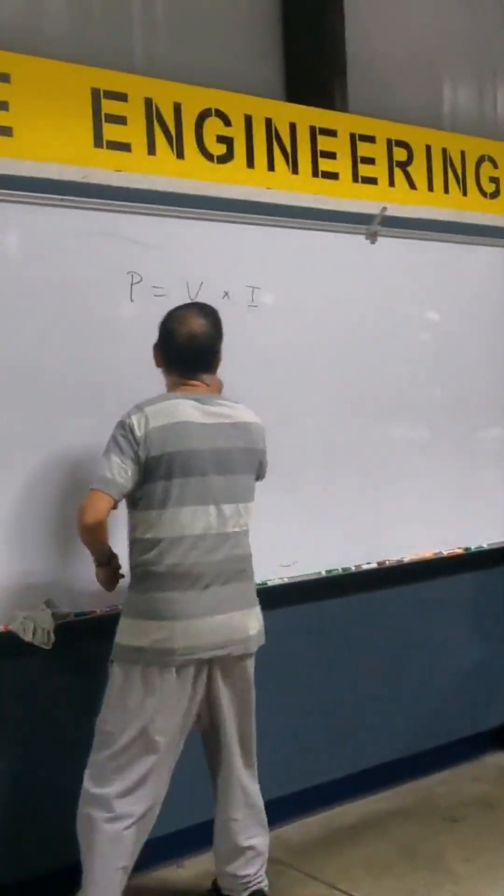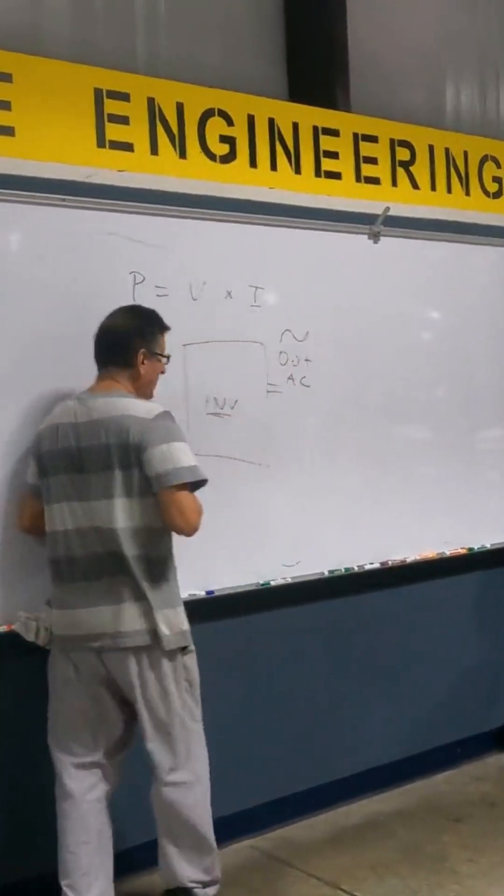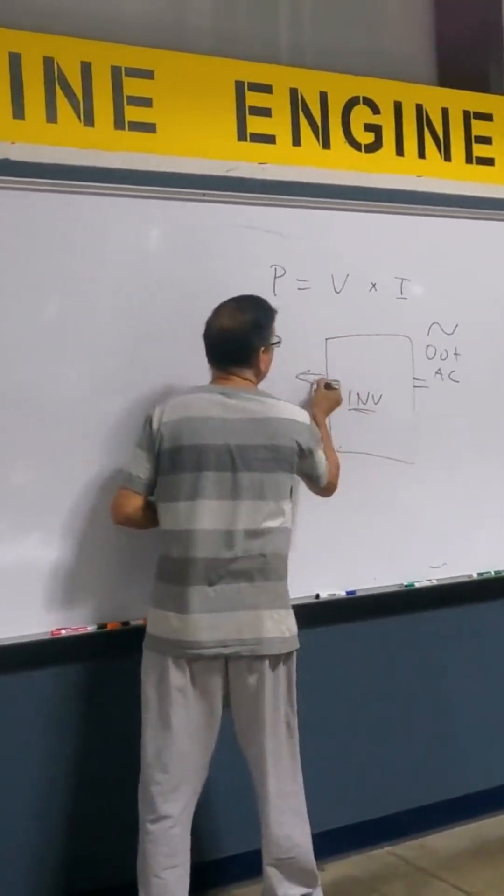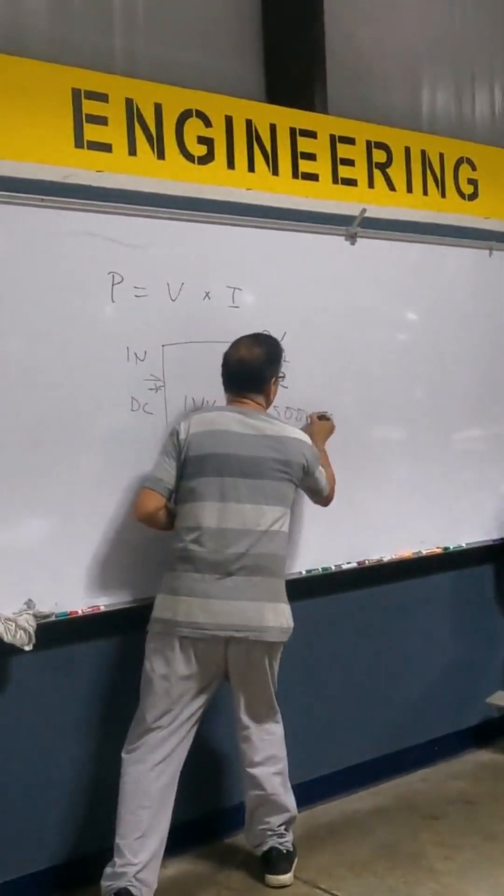This is my inverter. This is the output AC, AC signal. That's clear, guys? And this is the input DC current. In the output, I wanted 5,000 watts.